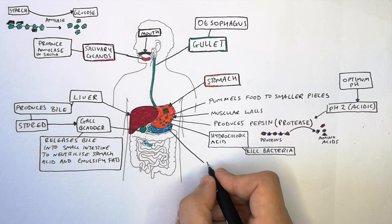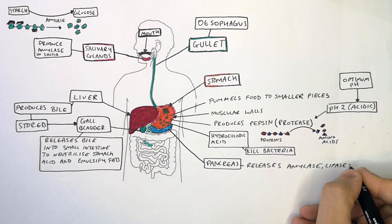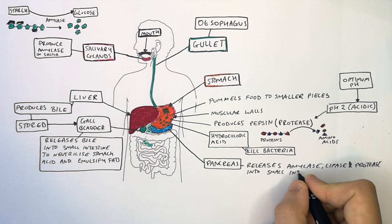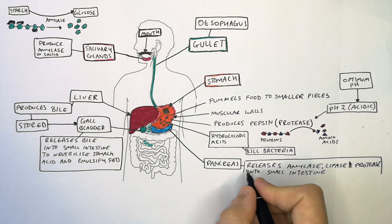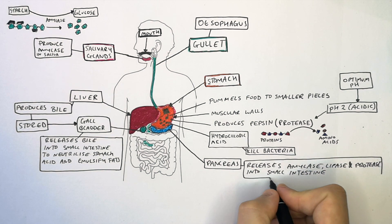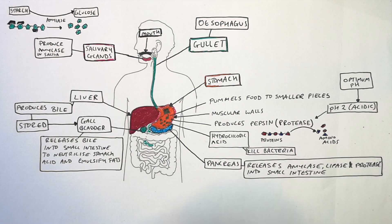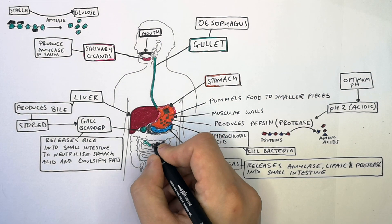The pancreas releases amylase, lipase, and proteases into the small intestine. These enzymes are produced and stored by the pancreas and released into the small intestine to help digest food even further.